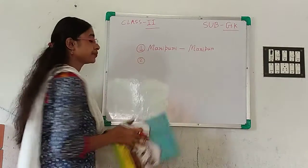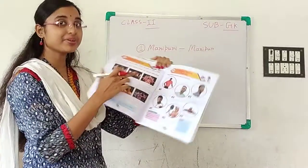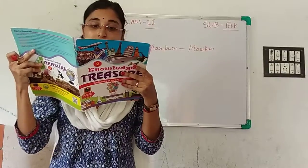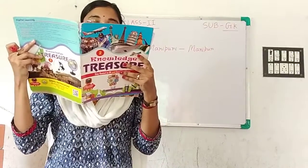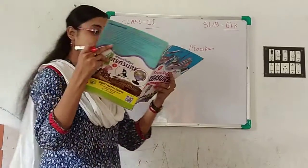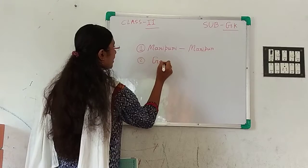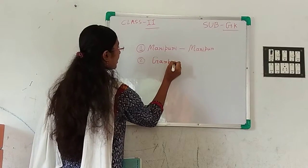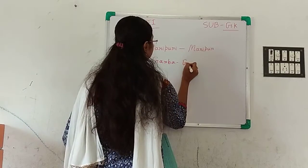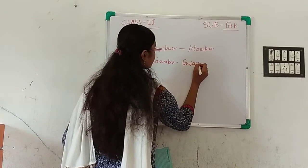Next, number 2. Which dance form is this? Can you tell me? Garba. G-A-R-B-A. Garba is a form of dance which originated from the state of Gujarat in India. So Garba, Gujarat.